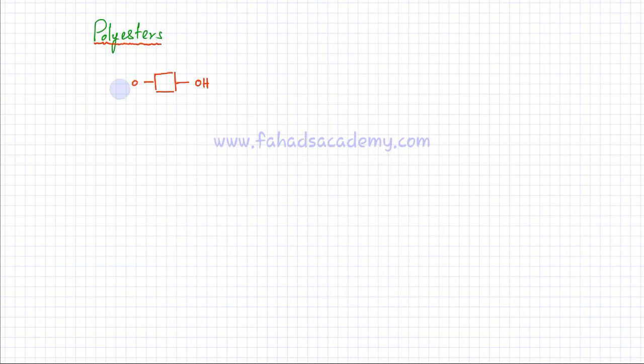In this lecture we're going to discuss polyesters. Polyesters are condensation polymers that are formed from two monomers. One monomer is a molecule that has hydroxy groups, or OH groups, on both sides — any type of molecule with OH groups on both sides. This is called a diol or dialcohol. The reason it's called a diol is because 'di' means two in chemistry, so there are two OH groups. This is the first type of monomer that makes a polyester.